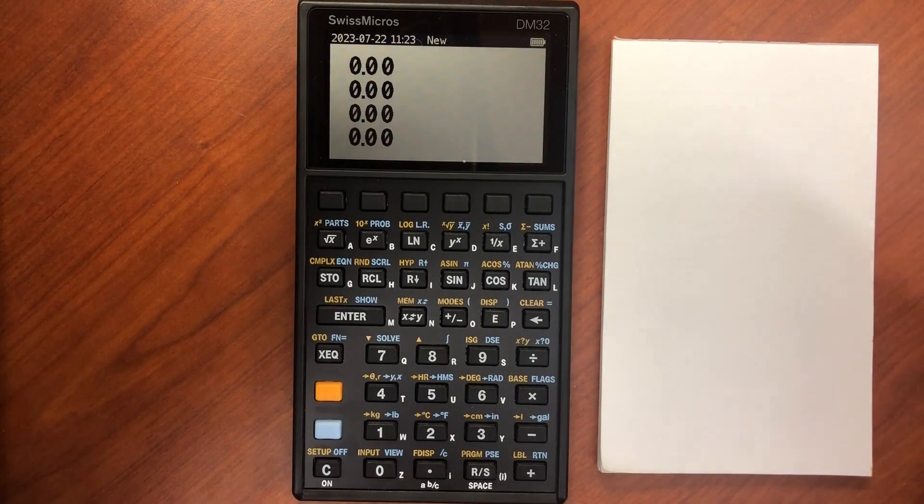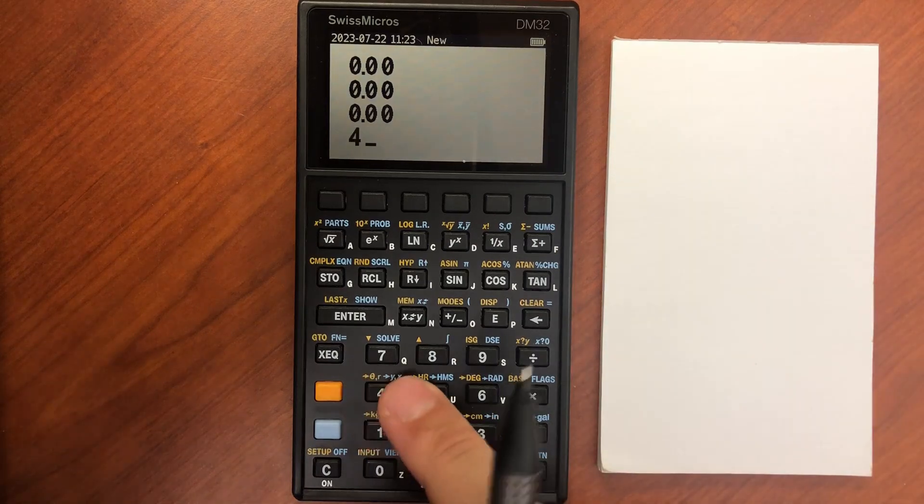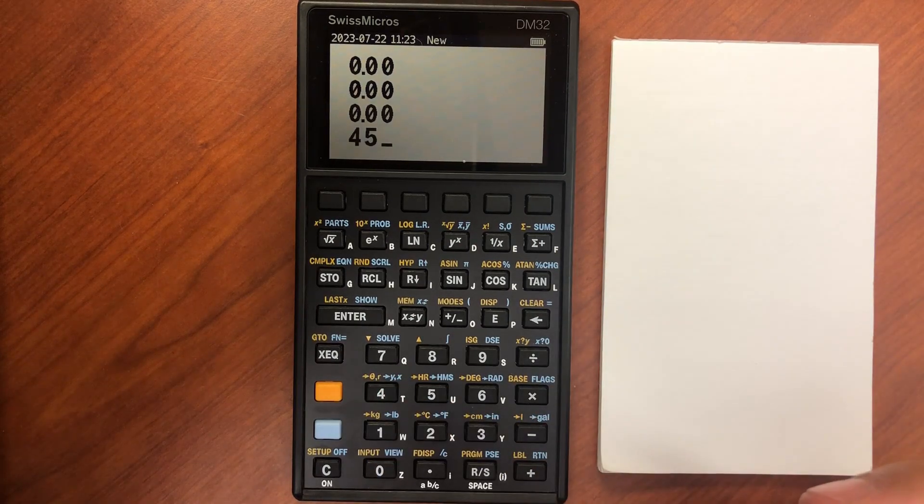Another really nice feature of the DM32 is the ability to change bases. So for example, I have 45 and I want to see what that is in binary.